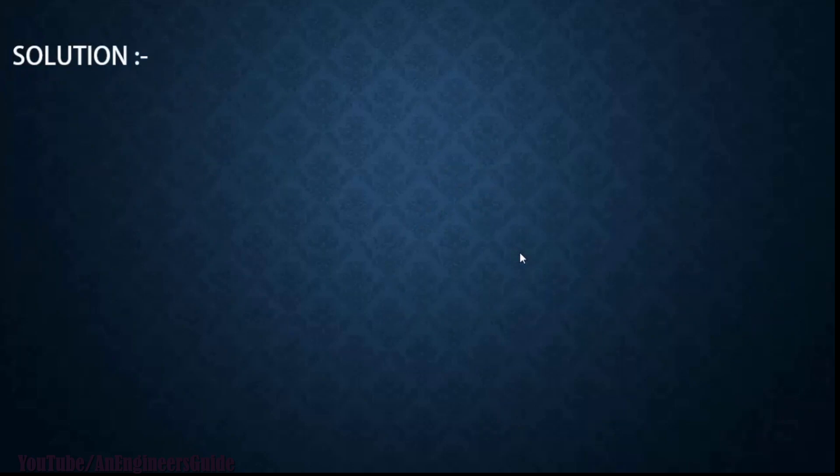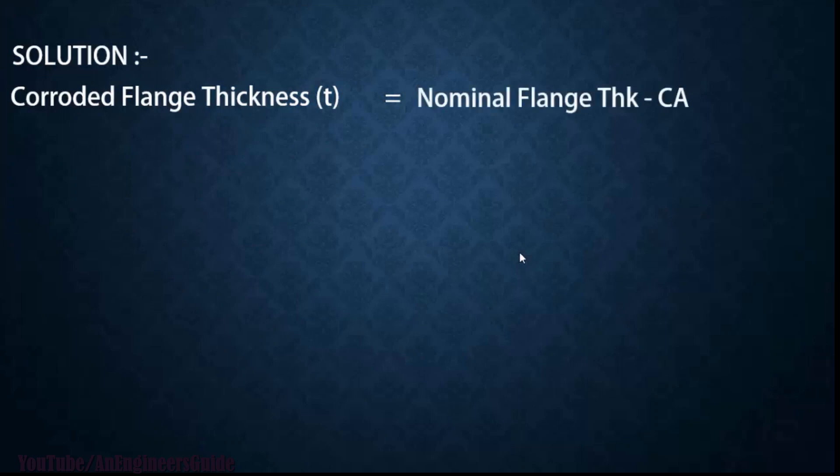Now let's see the solution. First we have to calculate the corroded flange thickness, which is nominal flange thickness minus corrosion allowance. So nominal flange thickness is 125 minus corrosion allowance which is 3, equals 122 mm.